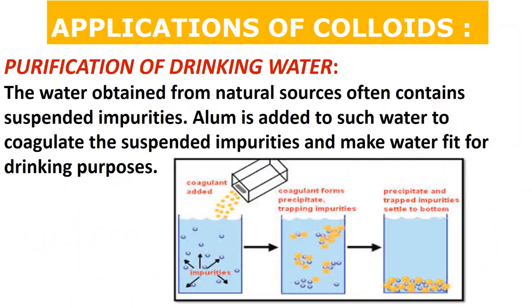Next is purification of drinking water. Whether by reverse osmosis or traditional methods, suspended impurities in natural water sources are treated by adding alum (phitkari). When phitkari is stirred in water, the alum ions precipitate the colloidal particles like clay present in the water, which then settle down — making the water fit for drinking.